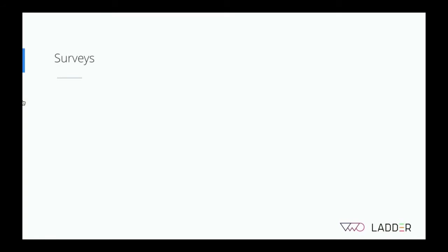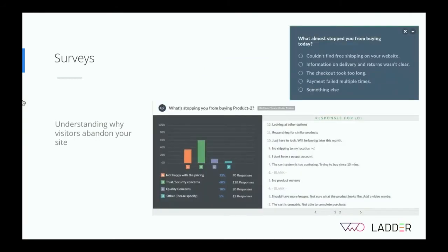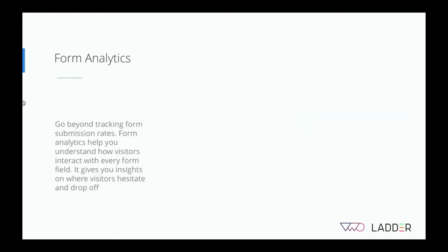On-site triggered surveys are another very effective tool to understand visitor intent, what distracts them, or what motivates them. For example, you could ask 'Do you remember where you first got to know about us?' to understand word of mouth. Or to understand why visitors are abandoning, you could ask 'What almost stopped you from buying today?' triggered on exit intent. Surveys are powerful because triggers can be based on time spent on a page, how far they've scrolled, or any custom trigger — asking the right question at the right time.